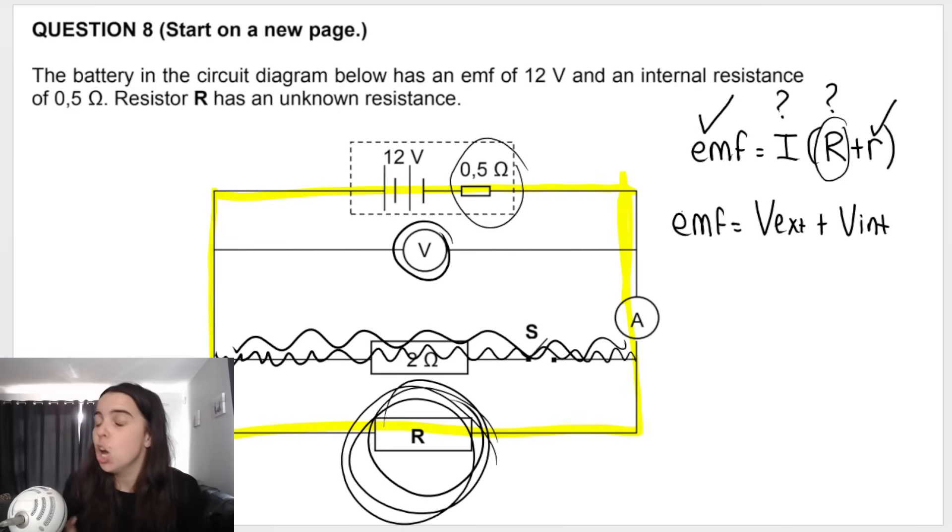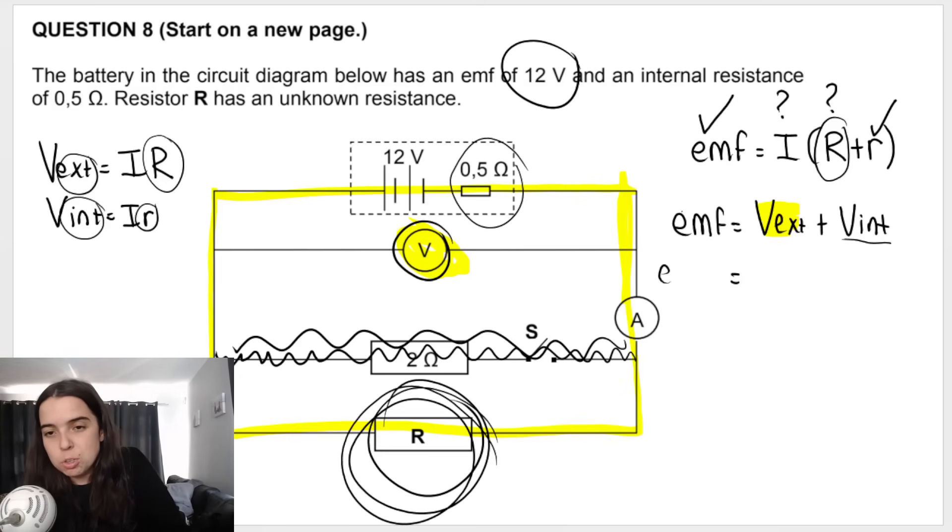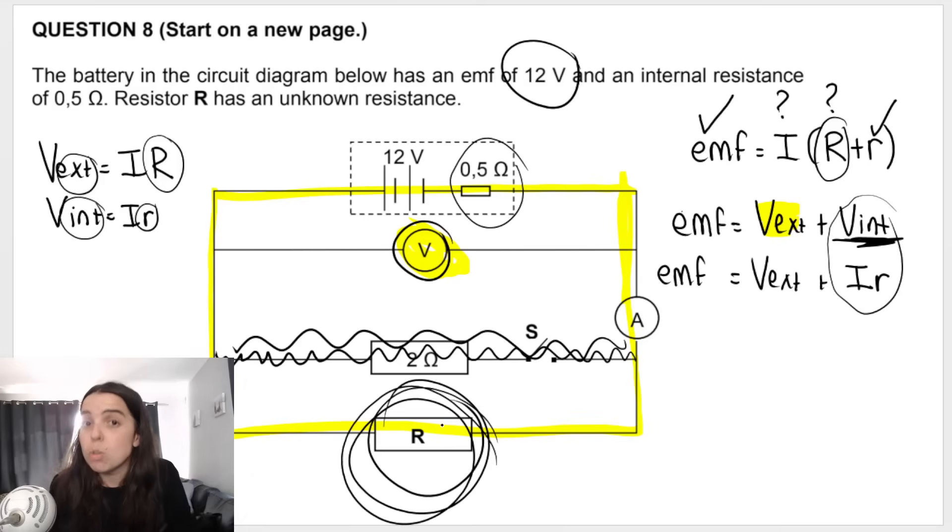But what you should know is that EMF is equal to, as I mentioned earlier, V external plus V internal. Now think about that carefully. We said we are looking for the reading on the voltmeter. We're looking for this reading over here, which is V external. EMF is given to me in this question. It's 12. And V internal, how would you calculate V internal? Well, V internal is calculated in the following way. Remember, V external is I times R external. V internal is I times internal resistance. You see the difference? To calculate V external, you need external resistance. To calculate V internal, you need internal resistance, which we have. So basically, what I'm doing at the moment is I'm expanding this formula like this. Instead of writing V internal, I'm going to write I times baby R, because V internal is equal to I times baby R.